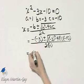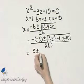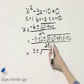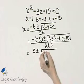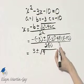Negative negative 3, that's positive 3, plus or minus the square root of 3 squared is 9, and we have 9 minus. Now be very careful.